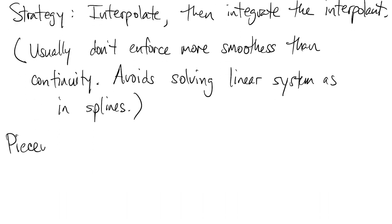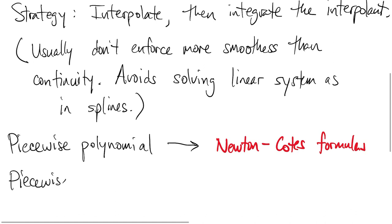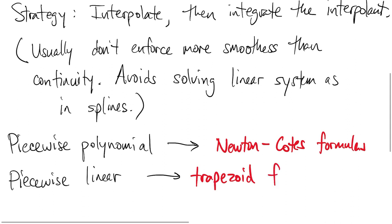When the interpolant in this strategy is a piecewise polynomial, the resulting method is called a Newton-Cotes integration formula. And when we have the particular case of a piecewise linear interpolant, it's called the trapezoid formula.